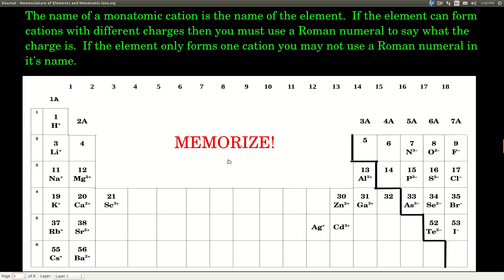When you say the name of a monatomic cation - positively charged, monatomic meaning there's just one atom - with a positive charge, it's just the same name as the element. However, if that element can form cations with different charges, you must use a Roman numeral to say what that charge is. On the other hand, if the element only forms one type of cation - only one type of charge - then you're not allowed to use a Roman numeral in its name.